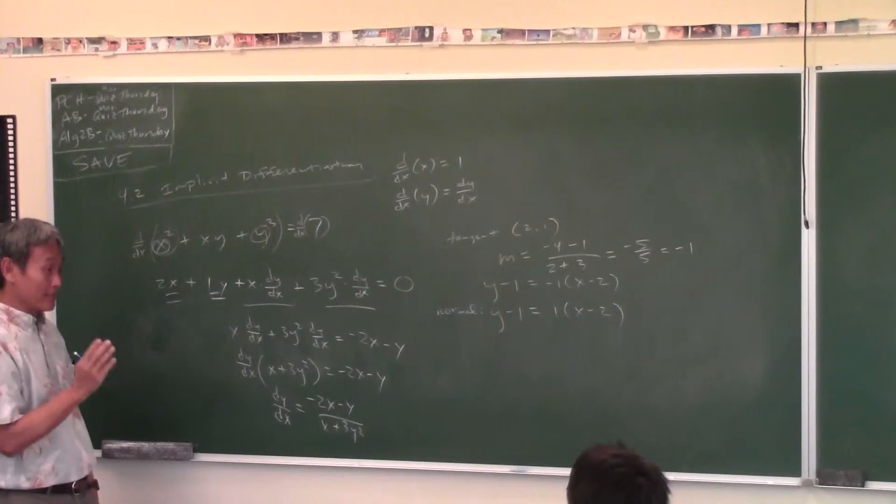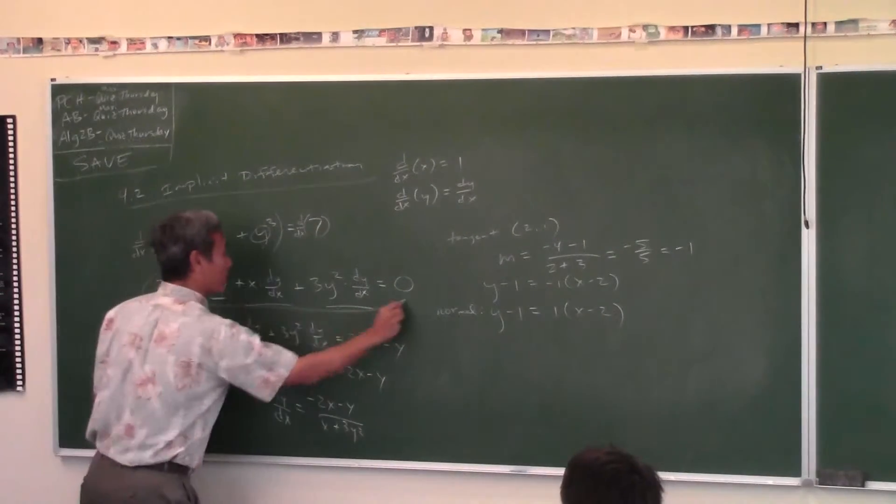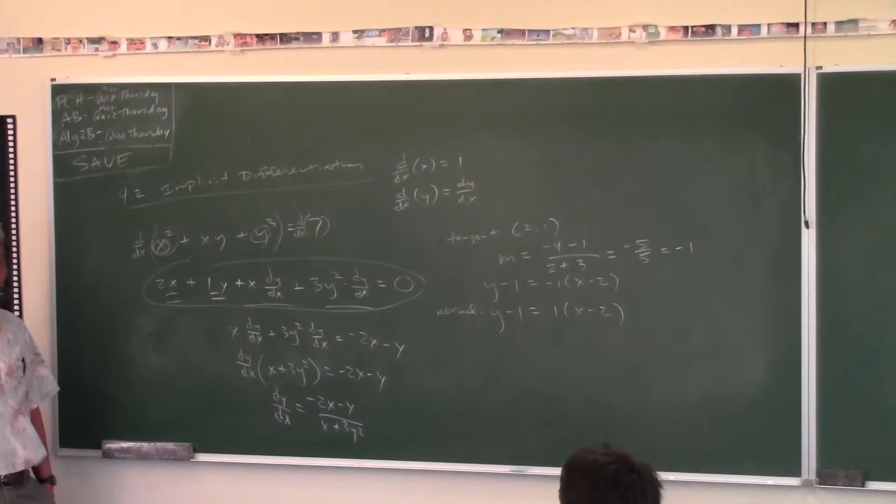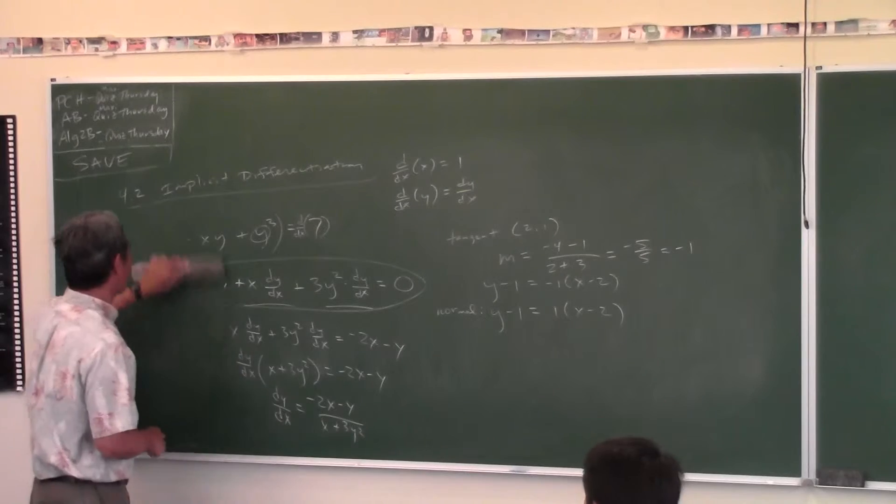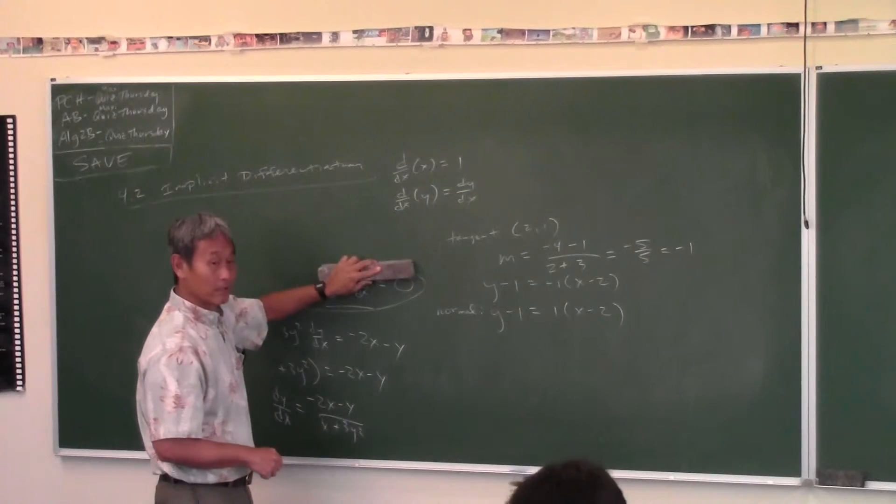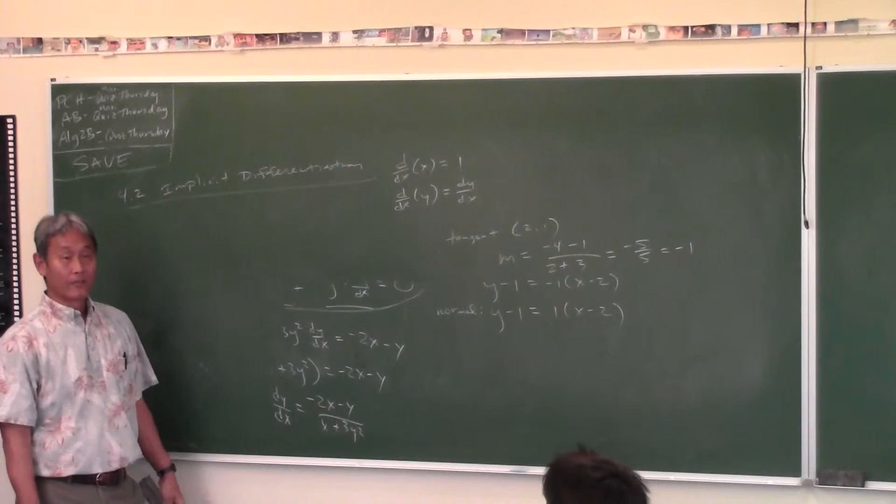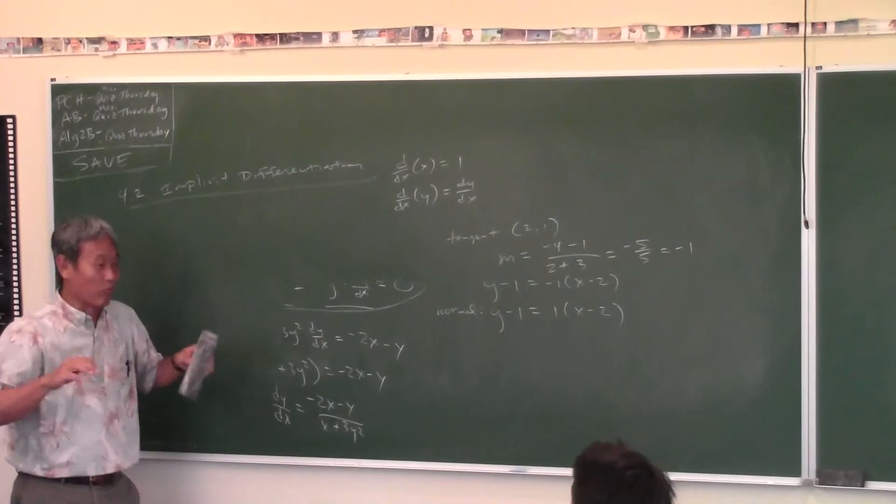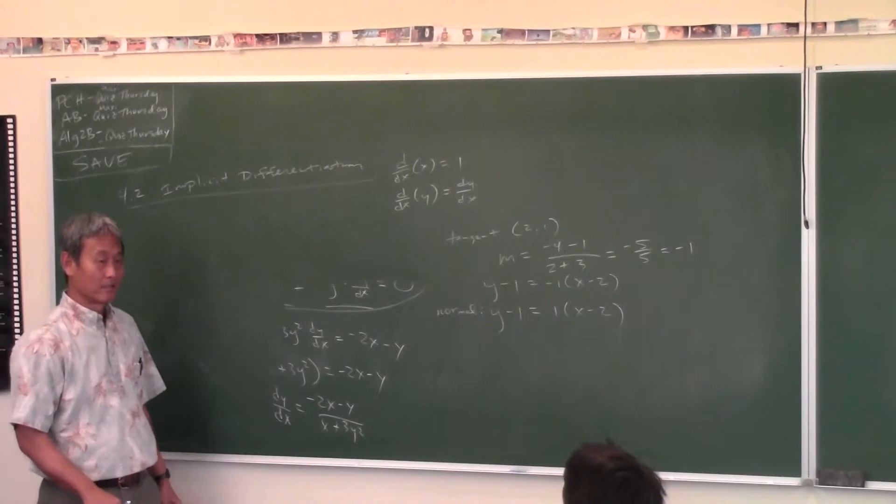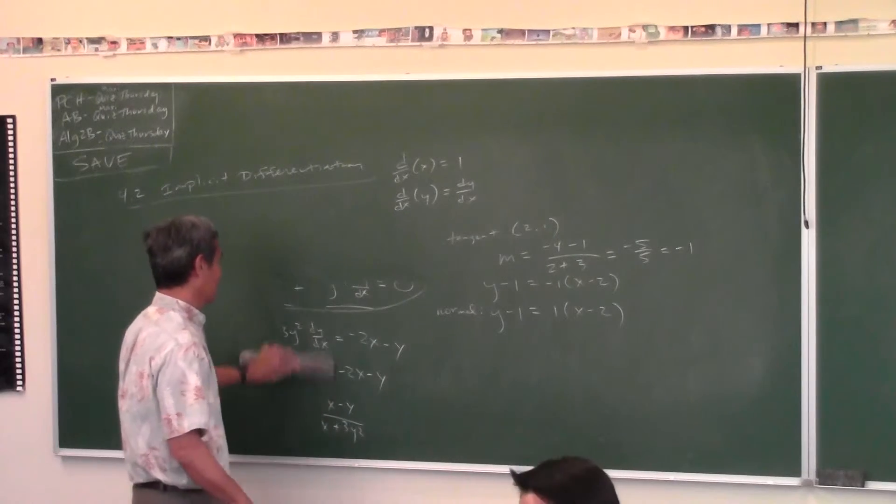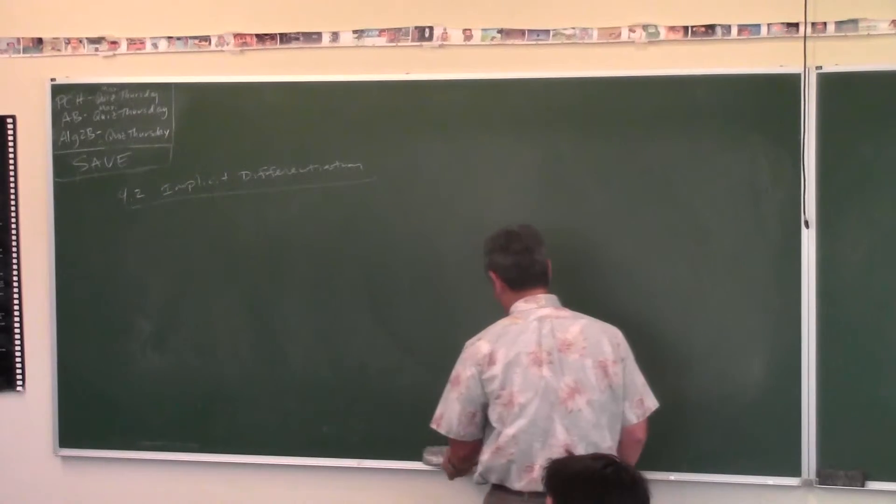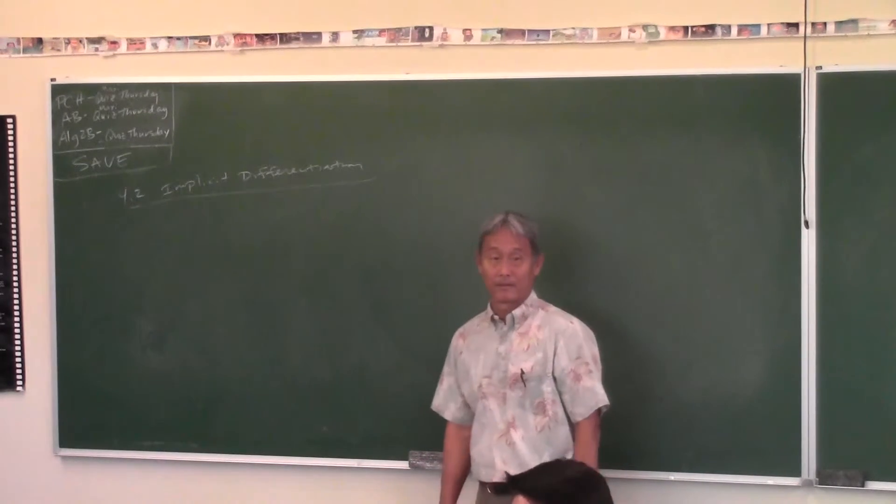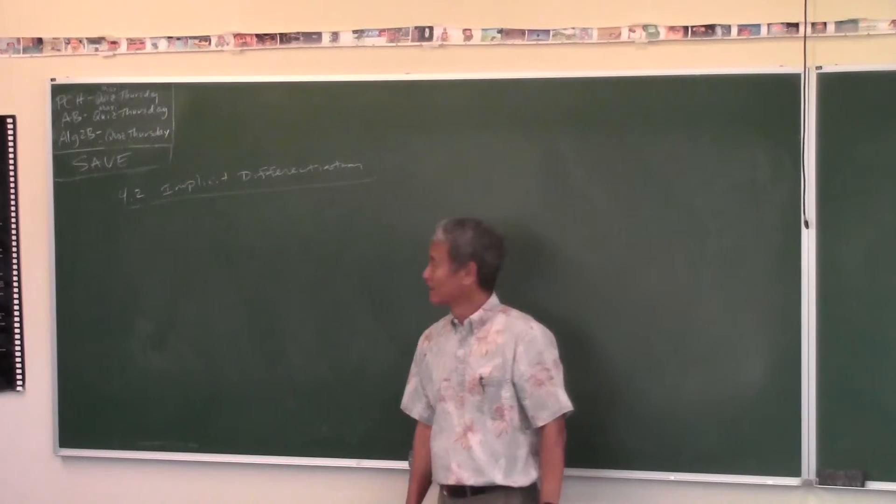So now, what if I told you, write the equation of the tangent line at the point 2 comma 1. Okay. Well, what do you need to write an equation of the tangent line? Slope. You need a point. Which I gave you. And then you need the slope. Well, the derivative tells you the slope. Yeah. Well, Mr. Park got x's and y's in it. Well, just plug in 2 for x and 1 for y. That's all you gotta do.